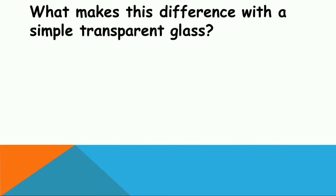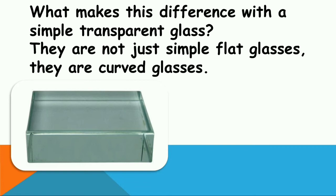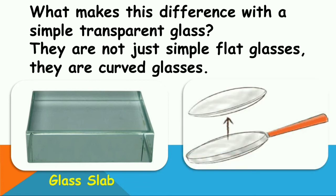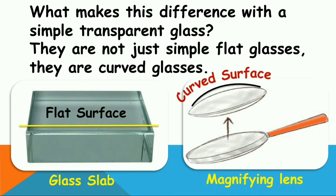We know a lens is a transparent glass, but it is not just a simple flat glass — these are curved glasses. What is the meaning of curved glass? Let us take a glass slab and a magnifying lens, and check the surface of each. If you draw a line along the surface, for the glass slab it is a flat surface, and for the magnifying lens it is a curved surface. This is the difference.